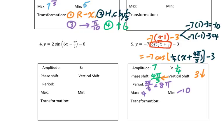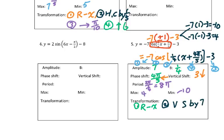For the transformation, label the steps. The negative sign is step 1, the 7 is step 2, the 1 over 4 is step 3, the 4π over 5 is step 4, and the minus 3 is step 5. First step: reflect across the X-axis. Second step: vertically stretched by a factor of 7. Step 3, it's a liar, so horizontally stretched by a factor of 4. Step 4: move to the left 4π over 5 units. Step 5: go down 3 units.